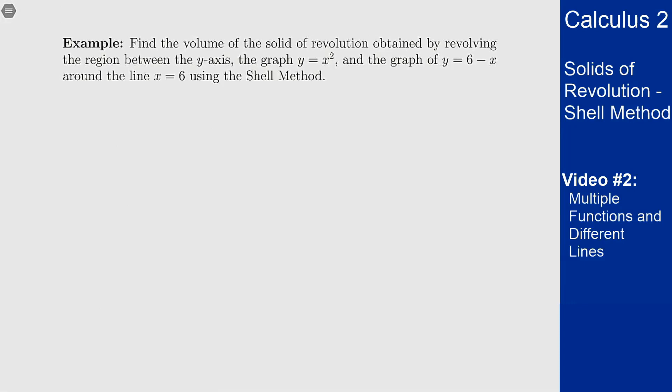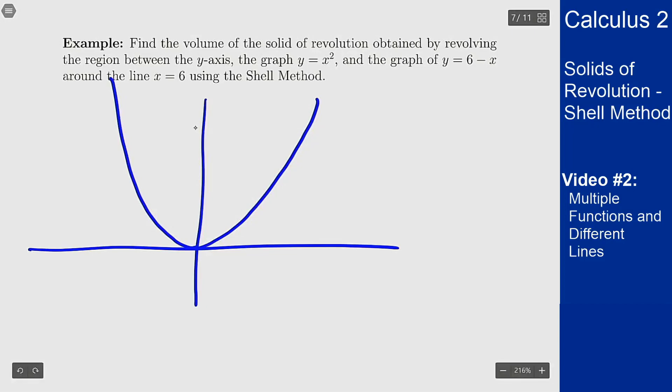Find the volume obtained by revolving the region between the y-axis, the graph y equals x squared, and the graph of y equals 6 minus x around the line x equals 6 using the shell method. So let's draw our picture here. The y equals x squared is a parabola, the y-axis is the vertical line there in the middle, and 6 minus x is a line of slope minus 1. The region I care about is this triangular thing here in the middle.